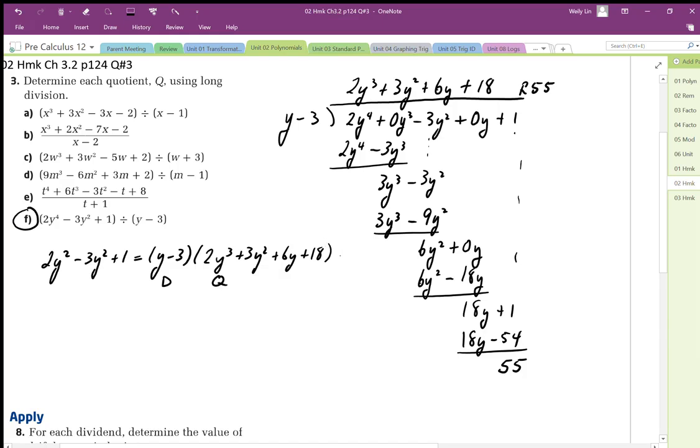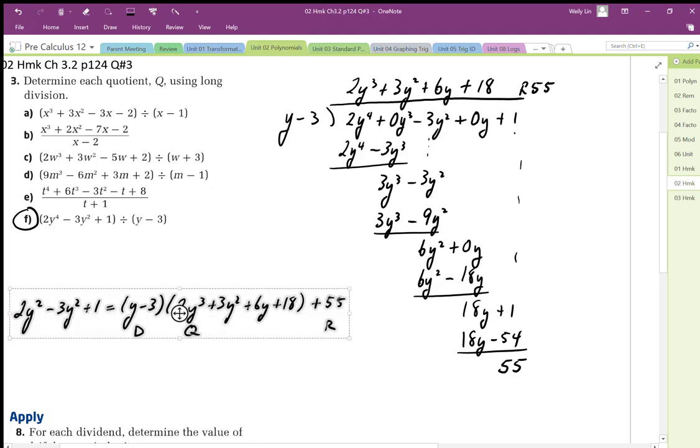Y cubed plus 3y squared plus 6y plus 18, and then plus the remainder, which is 55. Okay, so there's my division statement in its multiplication form.